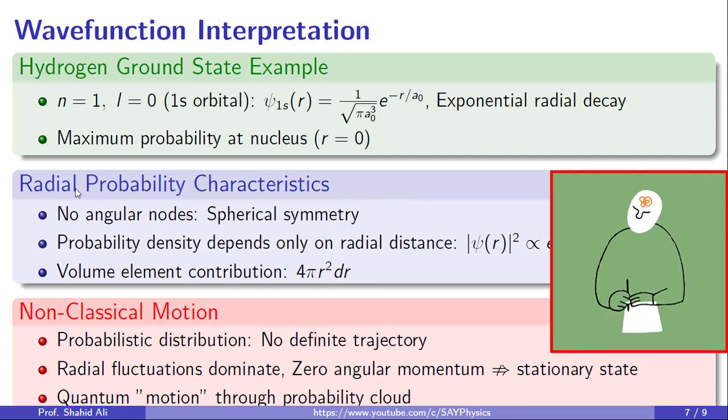Finally, it is important to emphasize that this kind of motion is not classical. There is no fixed path or trajectory. The electron does not orbit in circles. Instead, it exists as a probability cloud fluctuating radially. So once again, zero angular momentum does not mean a stationary electron. The electron is moving in the quantum sense, not along a path, but through a probabilistic wave function. This is quantum motion, not classical mechanics.